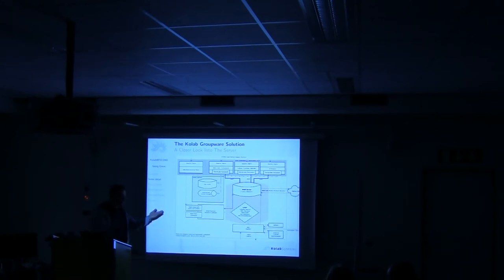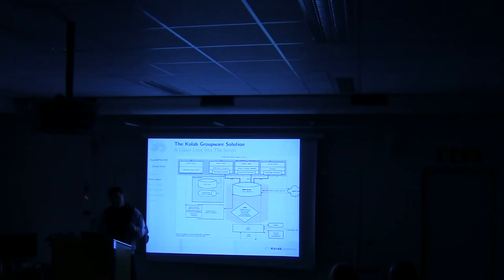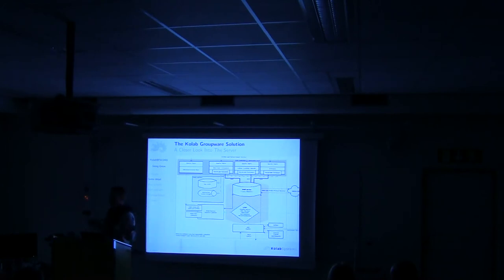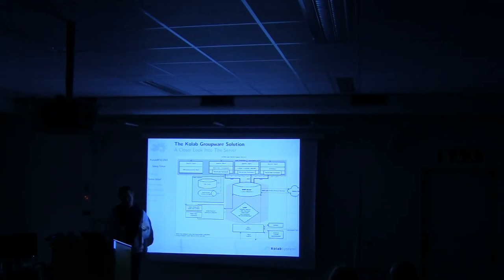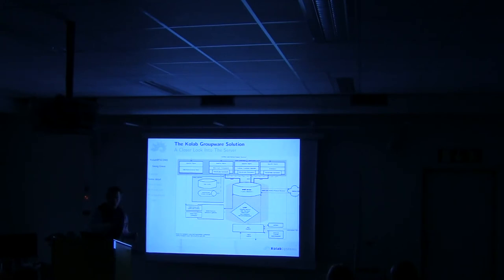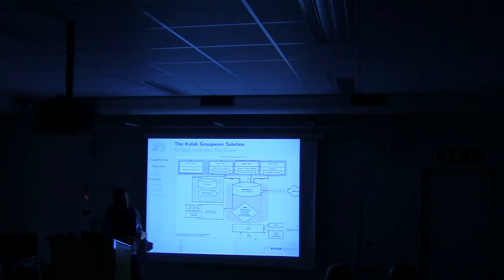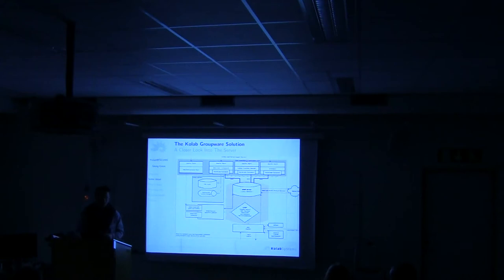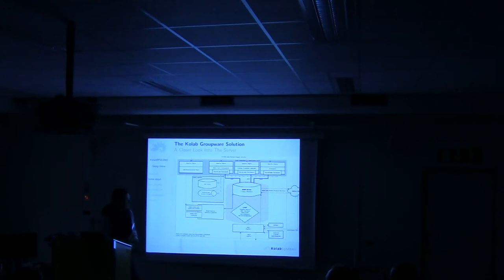For example, one large customer had an umbrella company with many businesses inside. They had a Robinson scenario where if company A has a customer that has opted out, company B should still be able to send mail to that same customer. We built a Wallace module that looks at the recipient, checks the database, sees if they're on the Robinson list for that sender, and manipulates the mail flow accordingly.